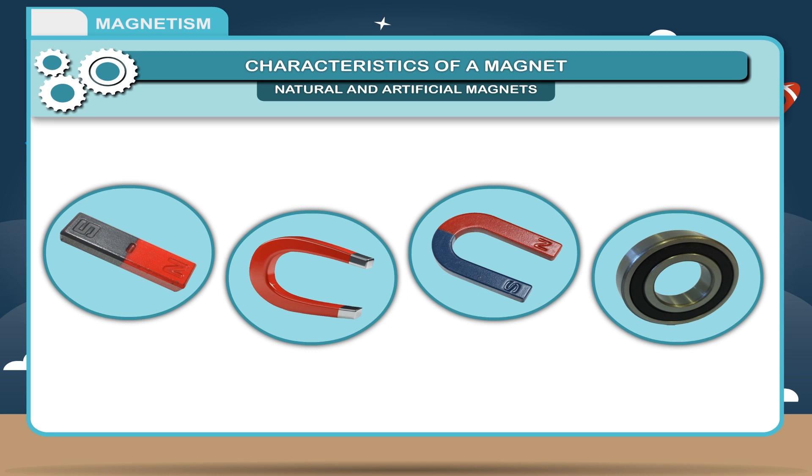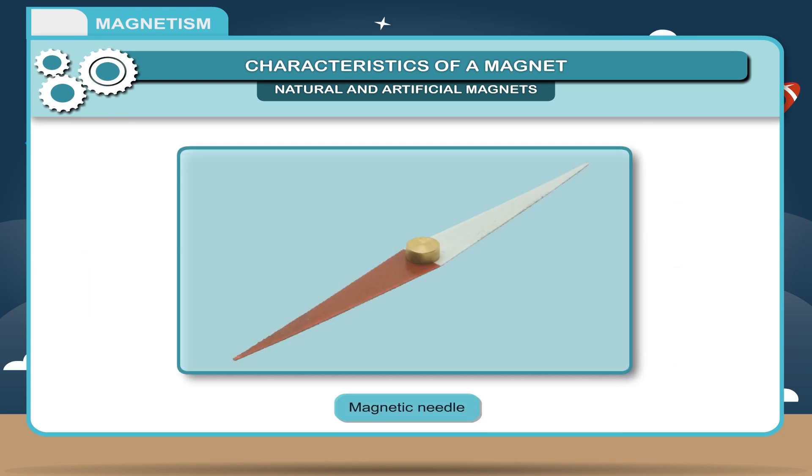The magnets can be categorized as bar magnet, horseshoe shaped magnet, u-shaped magnet, ring magnet and magnetic needle.